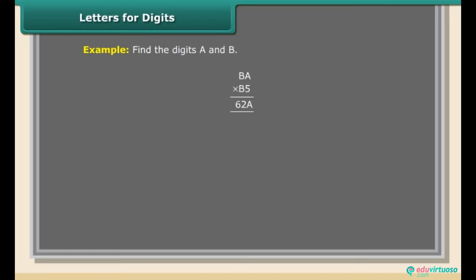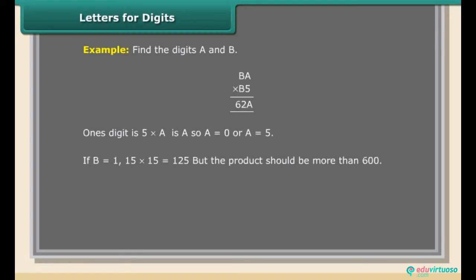Example: Find the digits A and B such that BA × B5 = 62A. The ones digit of 5 × A must be A, so A = 0 or A = 5. If B = 1, then 15 × 15 = 125, but the product must be more than 600. If B = 2, then 25 × 25 = 625, giving A = 5 and B = 2.